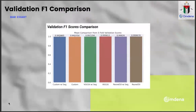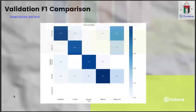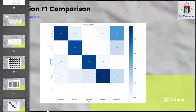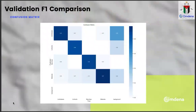For the validation F1 score comparison, there is actually no difference between different models. Even a very simple custom CNN does very well on this task.